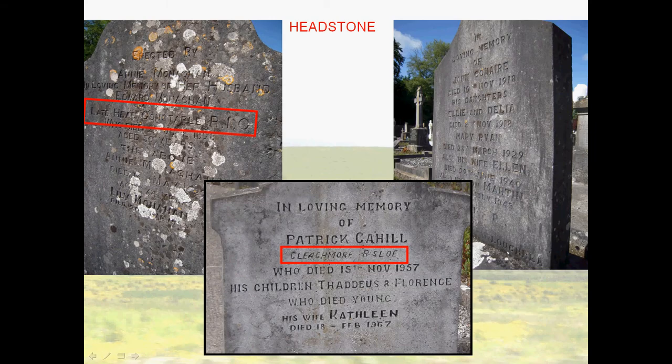Headstones in Ireland are beautiful. The one on the left says 'erected by Annie Moynihan in living memory of her husband Edward Moynihan, late head constable RIC.' That piece of information is very important — I could look for Edward in newspapers since he was a constable and might be mentioned in arrest events, and I might also find him in RIC records. The one on the right shows how many family members might be buried together: John Conair, his daughters Ellie, Delia, and Mary, his wife Ellen, and his son Martin, with their full birth dates as well.